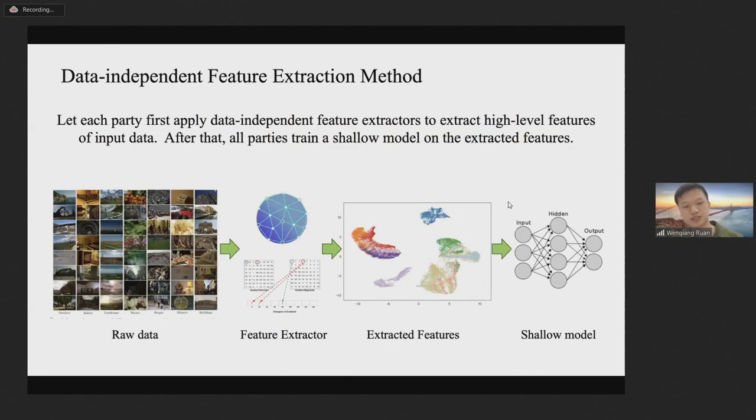Therefore, we propose to separate the feature extraction and the classification model training to simplify the structure of trained models. The data independent feature extractor can be heuristic rules or pre-trained foundation models. After feature extraction, parties collaboratively train a shallow model on the extracted features. As foundation models train on large-scale public data and the classical feature extraction rules can effectively extract the features of data, parties can obtain an accurate model based on the extracted features.